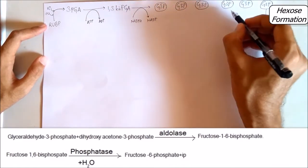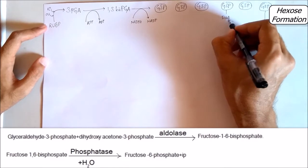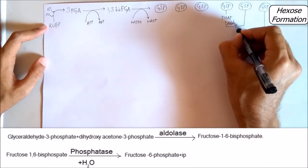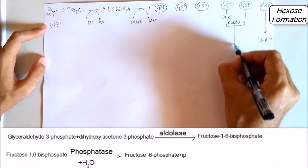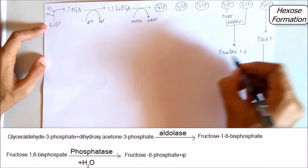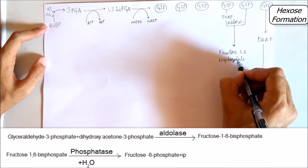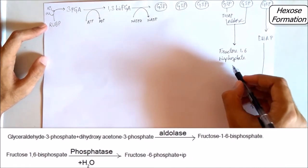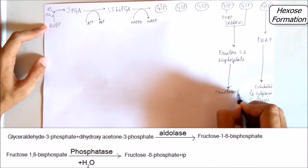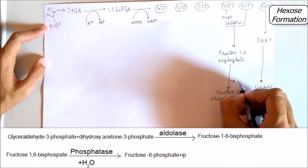And next, 2 glyceraldehyde 3-phosphate, this is made combined with DHAP. Again, in this aldolase is taking place. This gives rise to fructose 1,6-bisphosphate. Again, this is phosphorylase and gives fructose-6-phosphate where inorganic phosphate is also taken in this.